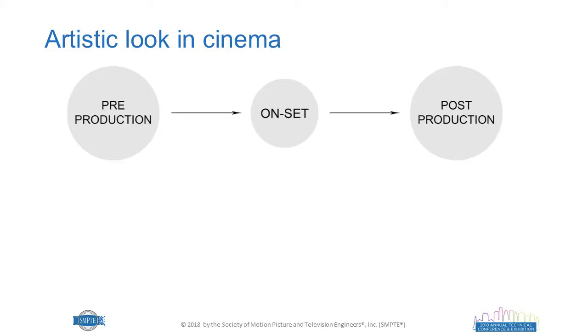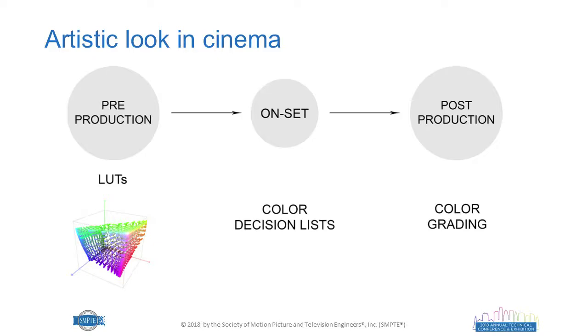From a technical point of view, the modification of color in cinema is done in three stages: pre-production, on-set, and post-production. In pre-production, LUTs — which are a 3D matrix containing color information — tell you where each color has to go. LUTs are then passed to the on-set stage where color decision lists (CDLs) are created by the director of photography and director. All of this is passed to post-production where the final color grading is done.